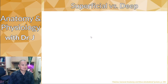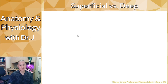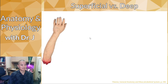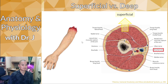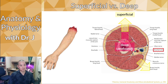Superficial versus deep: these are anatomical directions not always explicitly pictured in textbooks. Superficial means toward the outer surface of something, regardless of direction. Deep — sometimes called profound — is the opposite direction, away from the surface.